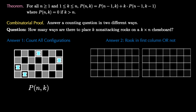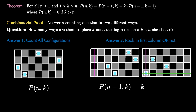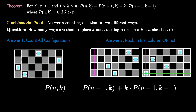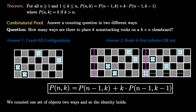The second answer uses the sum principle. We break configurations into two cases: where there's a rook in the first column or not. If we don't place a rook in the first column, we're placing k rooks on a k-by-(n-1) chessboard, giving P(n-1,k) configurations. If we do place a rook in the first column, we have k choices for where to put it, removing that row and column, leaving k-1 rooks on a (k-1)-by-(n-1) board: k times P(n-1,k-1) configurations. Adding these together, we've combinatorially proved the identity using the sum rule and product rule. Since we counted one set of objects two different ways, the two expressions must be equal. This is a combinatorial proof.